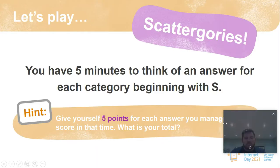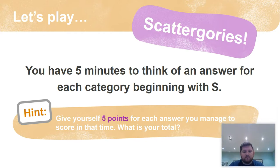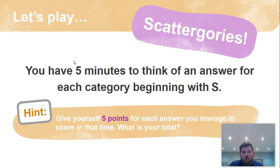Our first task today, our first little game, is a game called Scattergoose. It is a real board game that you can buy from the shops. You're going to have five minutes to think of an answer for each category beginning with S. I'm being generous with five minutes because in the real game it gives you maybe one or two minutes in total. If you can do it in two minutes, that would be fantastic, because you have five points for each answer.